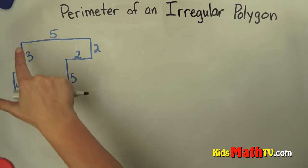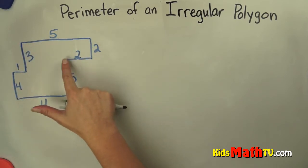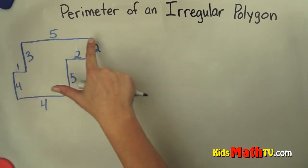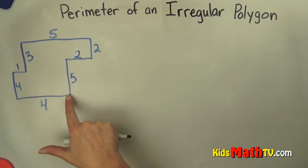So basically the perimeter is just the distance around a figure. So what we're going to do is simply add up all of these distances until we get all the way around.